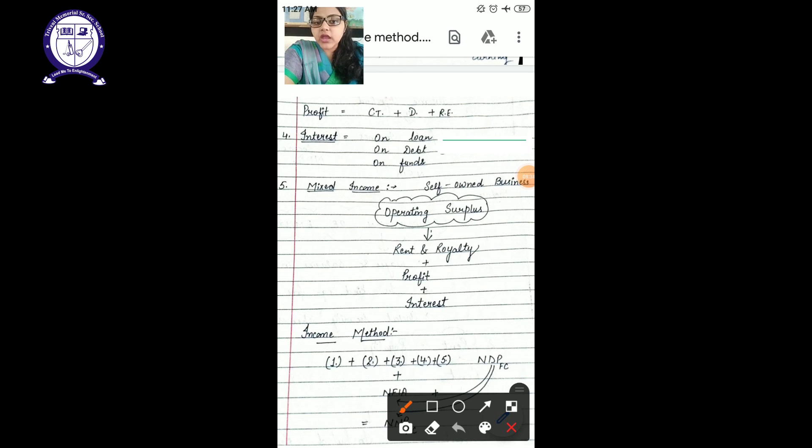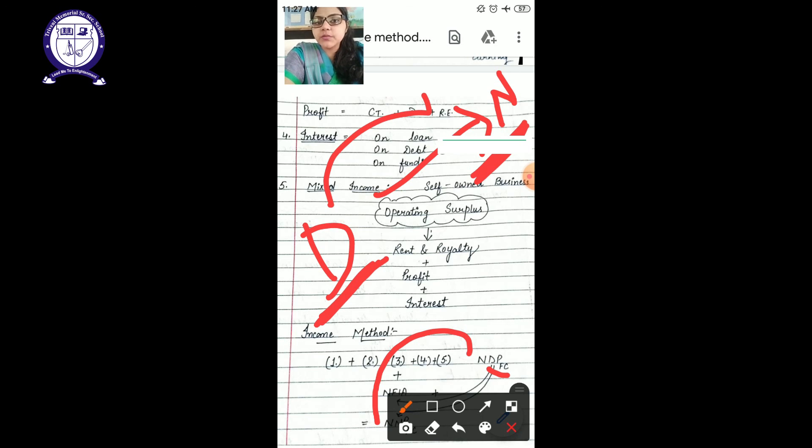N and N are the same, so we will not use anything. But we have to go from D to N, that means domestic to national. Domestic is a small concept, nation is a big concept. We are going from small to big, so we will add NFIA.